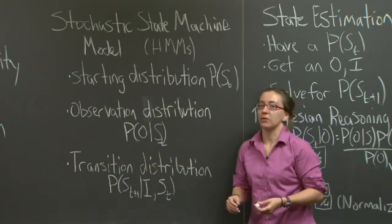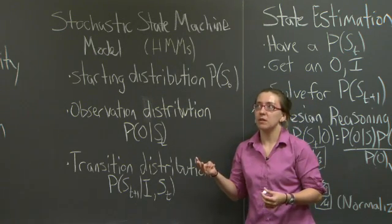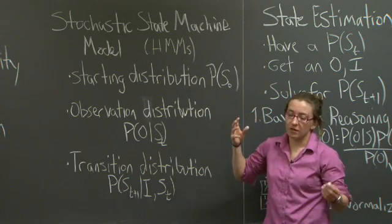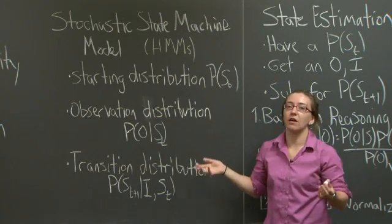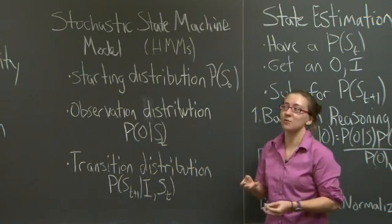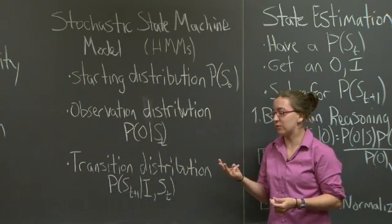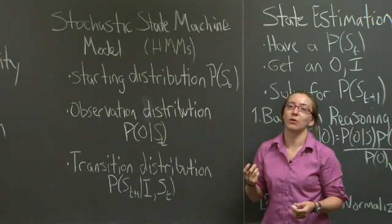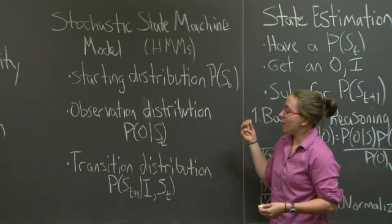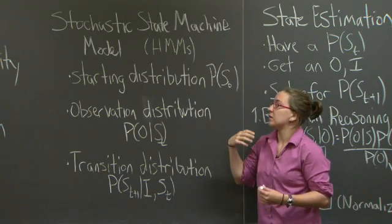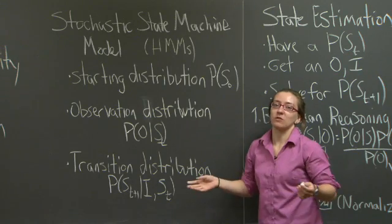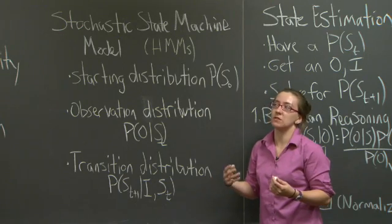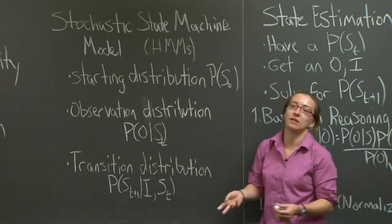When you build a stochastic state machine model, there are three components that need to be specified. The first is the starting distribution over states. For instance, let's say that I believe that I'm sick, and I'm trying to figure out what it is that I'm sick with. I could be sick with three things: strep, some other more boring virus, or mononucleosis. The starting distribution refers to my starting belief about the system. A common assumption is that it's uniform — it could be equally any of these things.